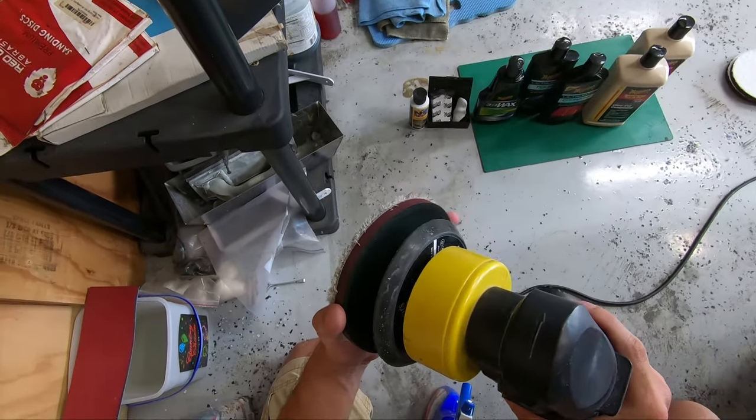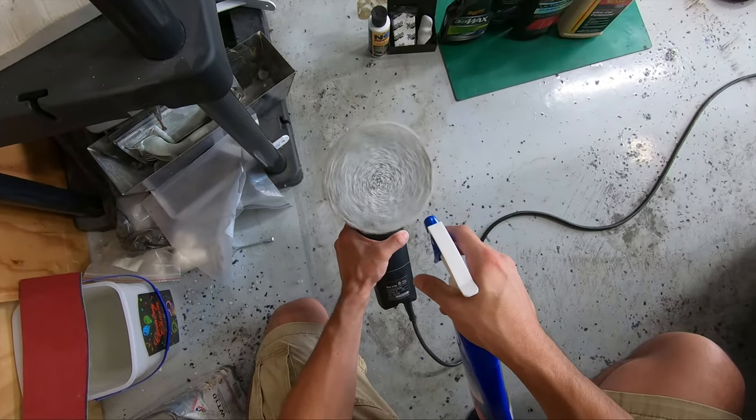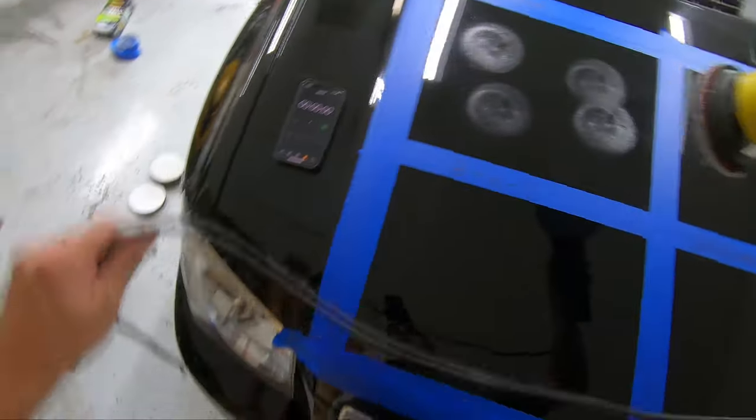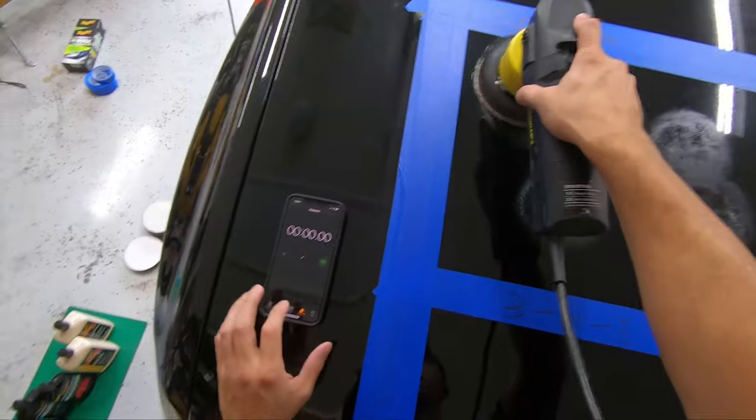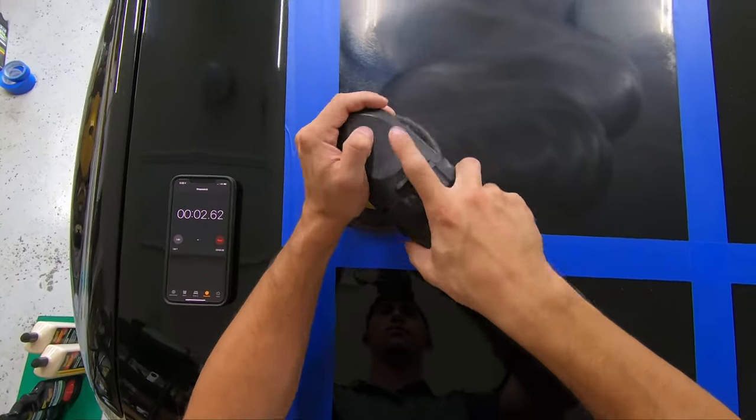Each of these tests will start with a Meguiar's microfiber cutting disc for the first product and polishing disc for the second product. I conduct each test at two minutes with a timer starting once the product has been spread across the whole panel. Our first product set will be Optimum's Hyper Compound and Hyper Polish starting with Hyper Compound on the cutting disc.